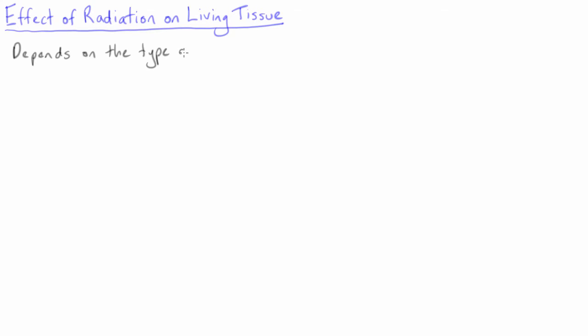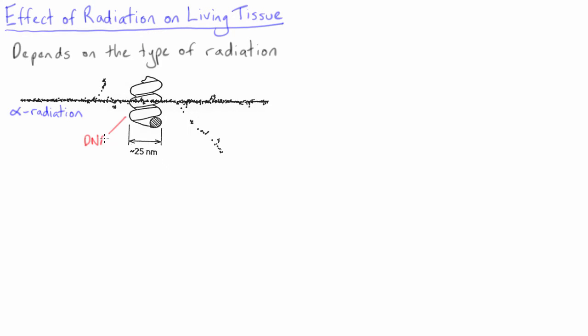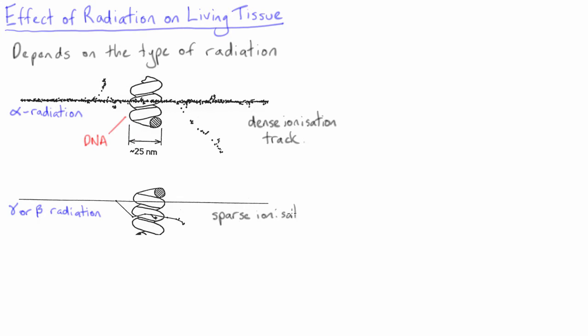This is the fact that different types of radiation deposit their radiation in different patterns. In particular, heavy charged particles like an alpha particle result in a very dense ionization track, while gamma rays and electrons, that is beta radiation, result in a relatively sparse ionization track with gaps between the interaction points.